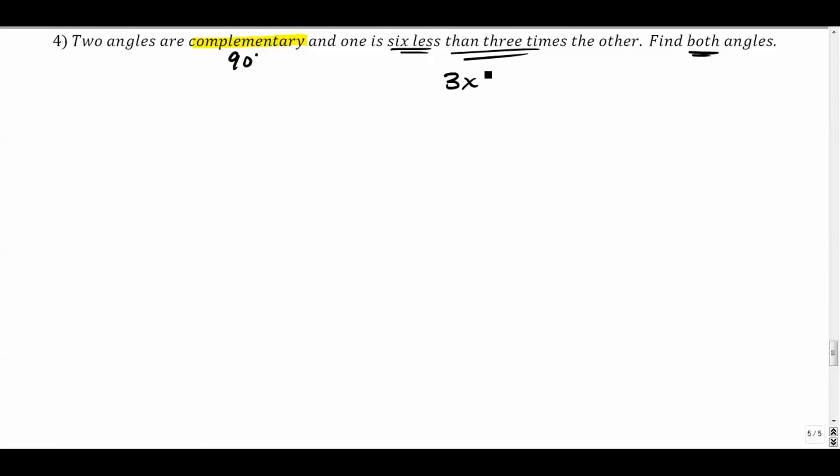And six less than that, we're going to put that at the end, minus six at the end. Be careful not to do this. A lot of students do this. This is wrong. Six minus 3x is not the right order. Six less than three times the other one looks like this. So my first angle is x, my second angle is six less than three times the other.